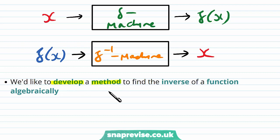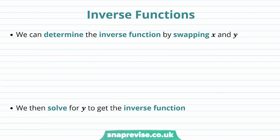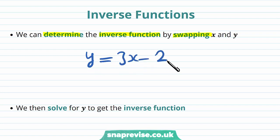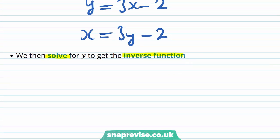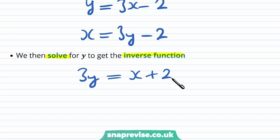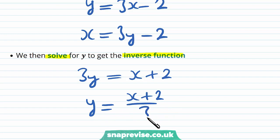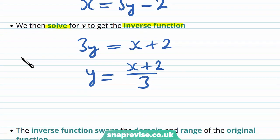We'd like to develop a method to find the inverse of a function algebraically. We can determine the inverse function by swapping x and y. So let's say we had y equals 3x minus 2. The first step is to put y in place of the function. Then we swap x and y to get x equals 3y minus 2. We then solve for y: rearranging gives x plus 2 equals 3y, so y equals x plus 2 over 3.